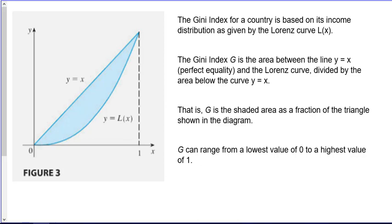Now, the Gini index for a country is based on its income distribution as given by that Lorenz curve. The Gini index, G, is the area between the line Y equal X, which would represent perfect equality, and the Lorenz curve, divided by the area below the curve Y equal X. So here I have the line Y equal X, and if I look at the area below that curve, I have the triangle. So I'm finding this blue area, and then dividing by the area of this entire triangle.